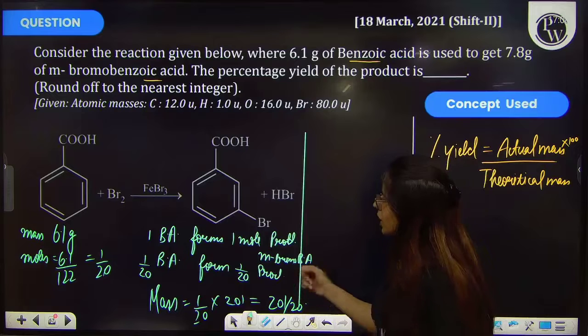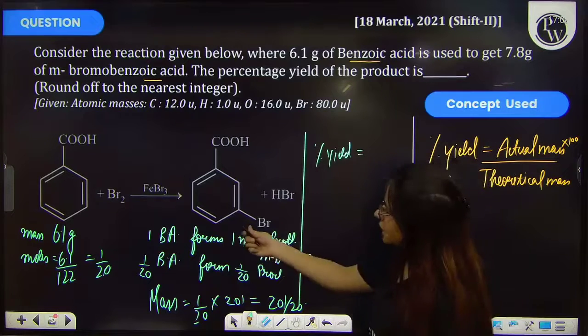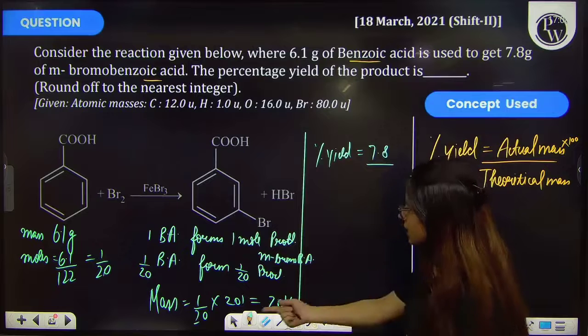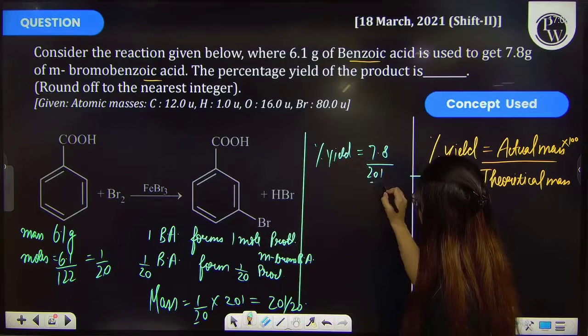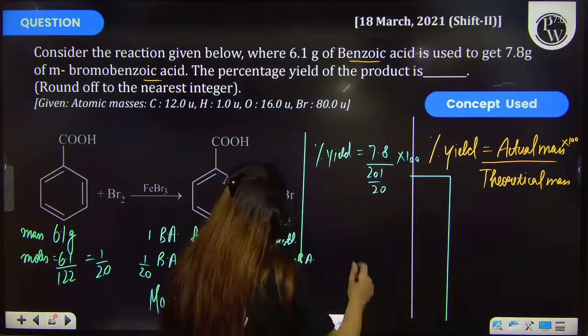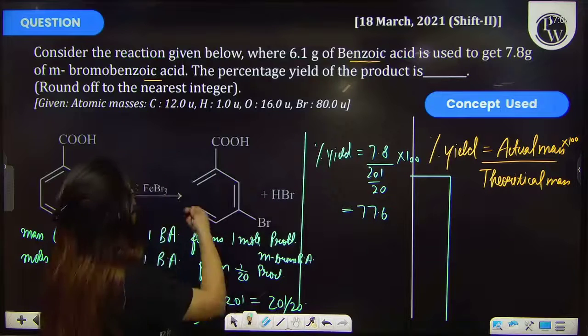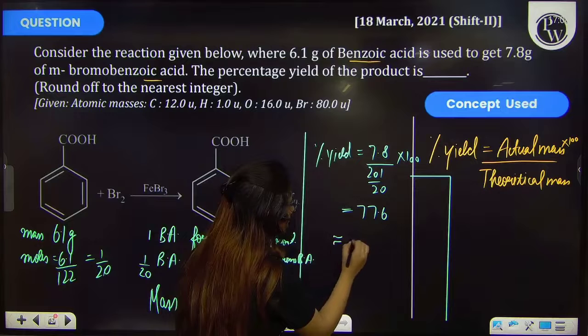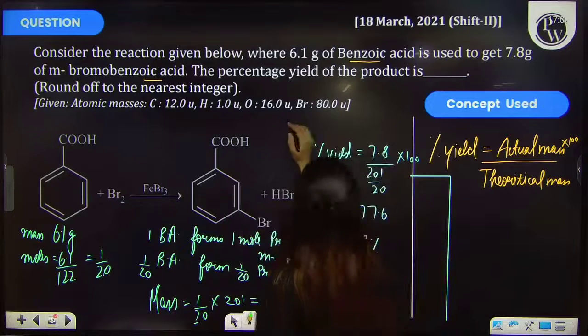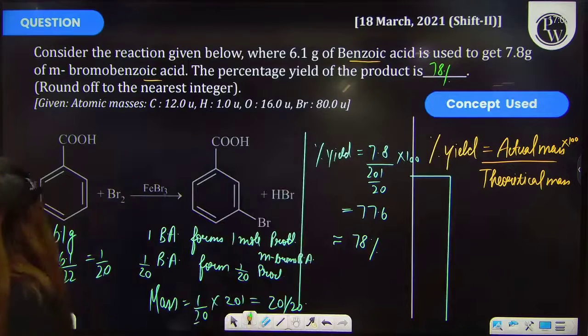Further, let's calculate the percentage yield. The actual mass of the product that was formed was 7.8 gram, and this is the calculated mass into 100. On further calculation, it will come out as 77.6. That is your percentage yield. But we have to round off the answer, so it will be 78 percent. That means your correct answer is 78 percent.